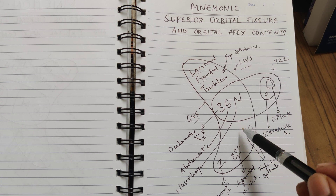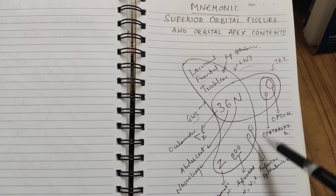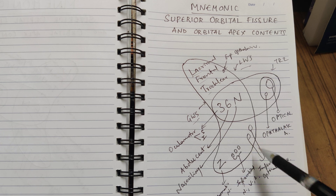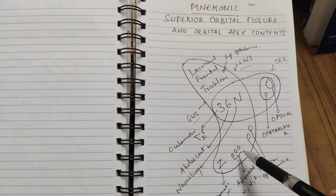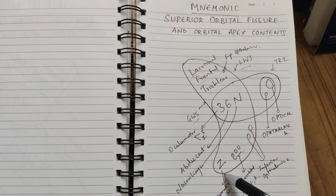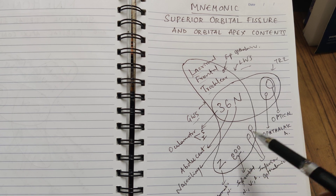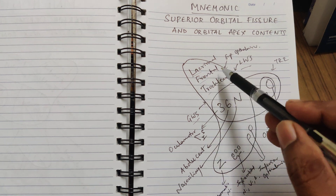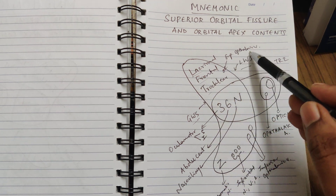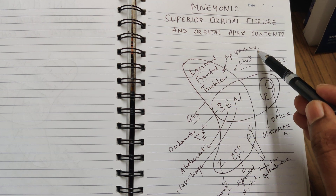The contents of the inferior orbital fissure are: inferior ophthalmic vein, infraorbital nerve, infraorbital vein, infraorbital artery, and zygomatic nerve. The superior orbital fissure also contains the superior ophthalmic vein.